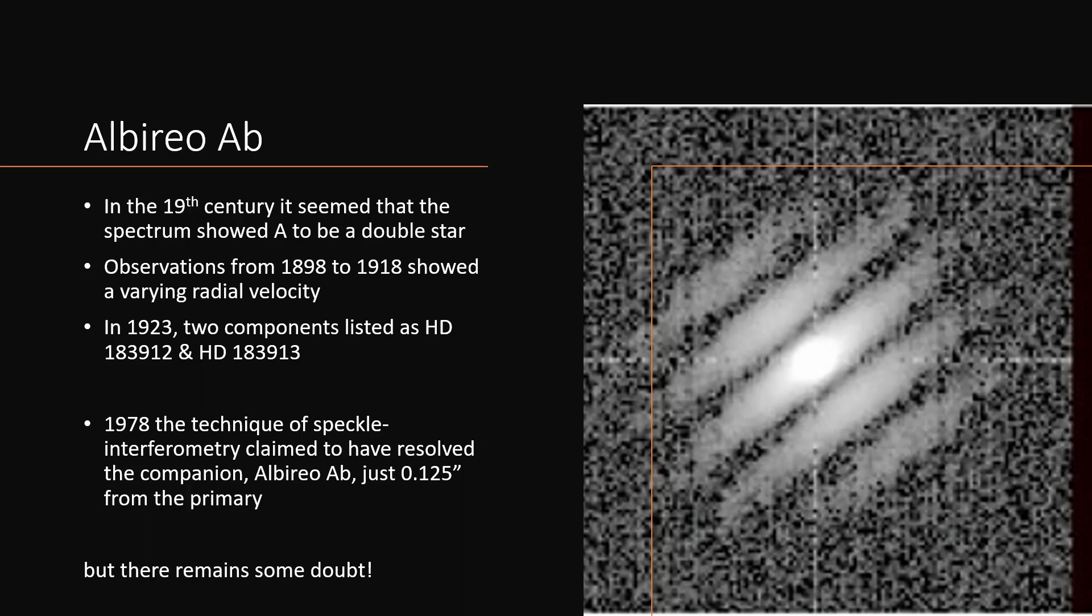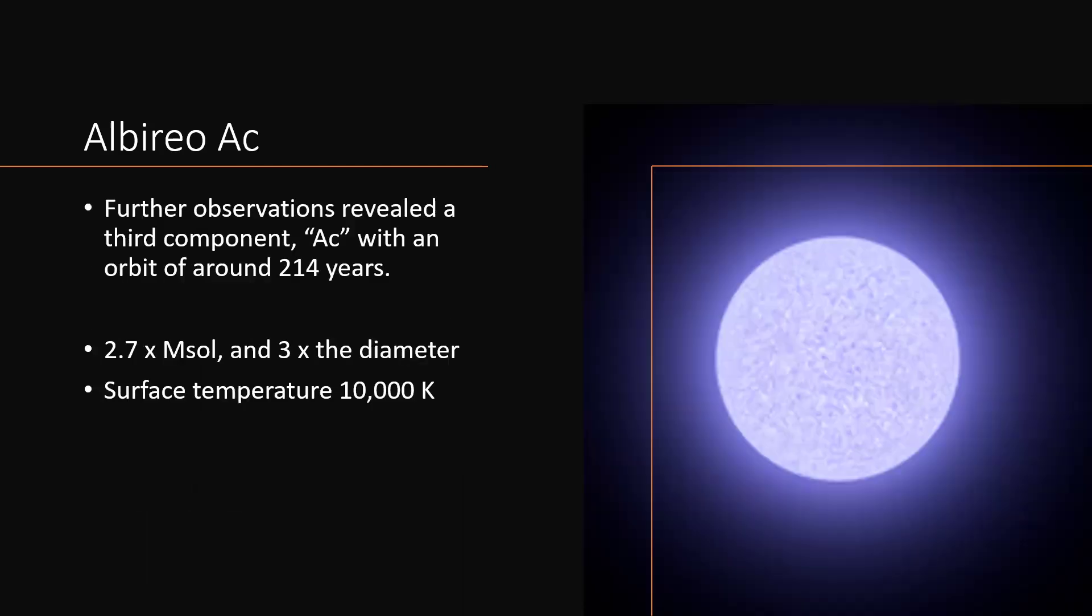What we have been able to show is that there is Albireo AC with an orbit of a couple of hundred years going around the primary. And this is a 2.7 solar mass star, three times the diameter on the main sequence, burning away brightly at 10,000 degrees Kelvin. So quite a powerful star in its own right.